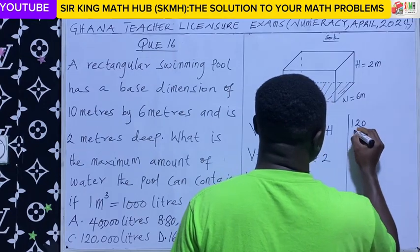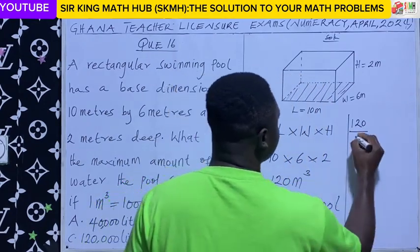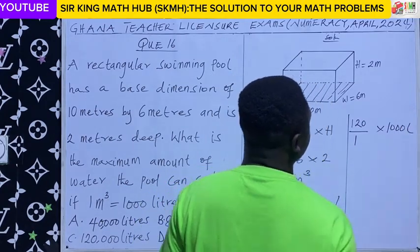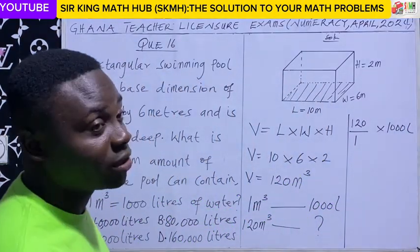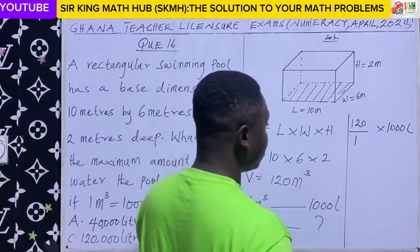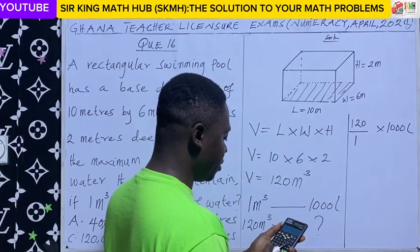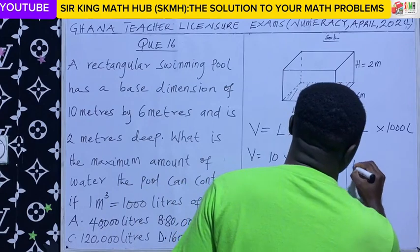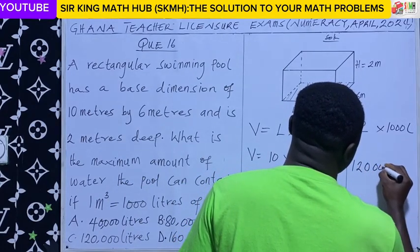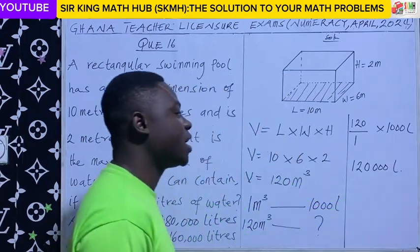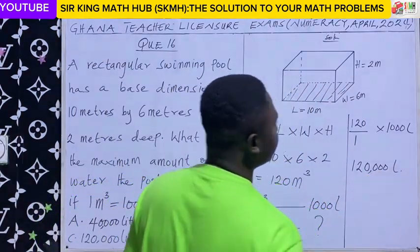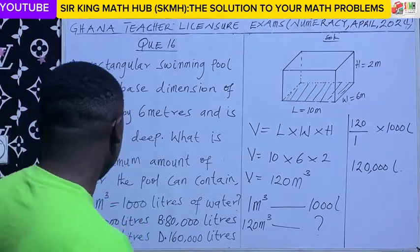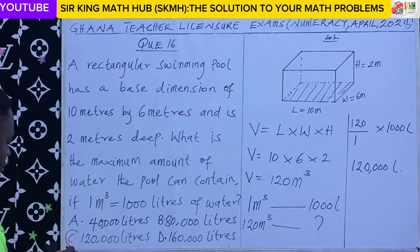Applying our proportion: 120 divided by 1 meter cubed times 1000 liters gives us 120 times 1000, which equals 120,000 liters. So looking at the alternatives, the right answer is option C.